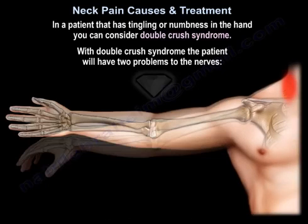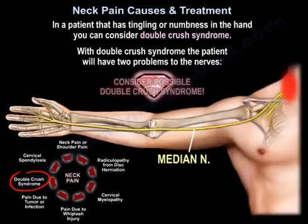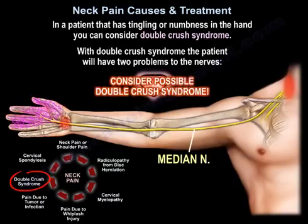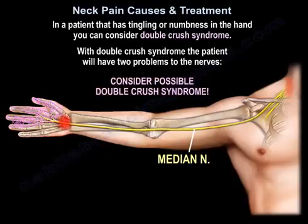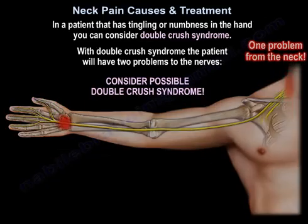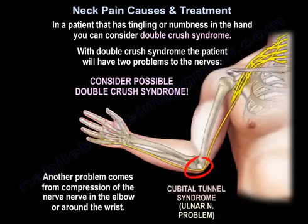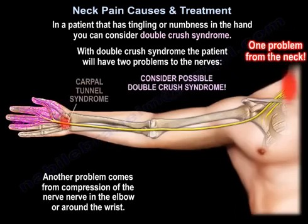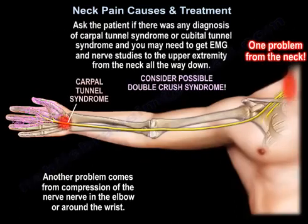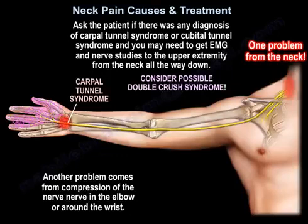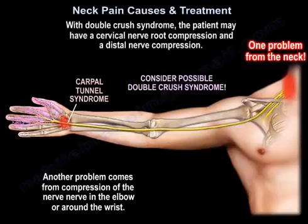In a patient with tingling or numbness in the hand, consider double crush syndrome, meaning the patient has two problems affecting the nerves. One problem comes from the neck, and another from compression of the nerves at the elbow — such as cubital tunnel syndrome — or around the wrist, such as carpal tunnel syndrome. Ask about any prior diagnosis of these conditions, and you may need imaging and nerve studies of the upper extremity from the neck all the way down.